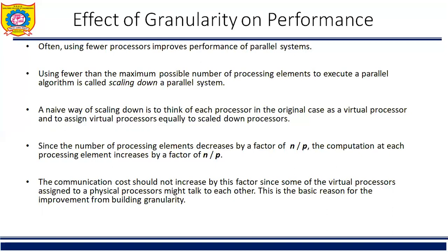As the number of processing elements decreases by a factor of n/p, the computation at each processing element increases by a factor of n/p. If virtual processing elements are mapped appropriately onto physical processing elements, the overall communication time does not grow by more than a factor of n/p. The total parallel runtime increases at most by a factor of n/p, and the processor-time product does not increase. Therefore, if a parallel system with n processing elements is cost optimal, using p (p < n) processing elements to simulate n preserves cost optimality.